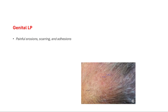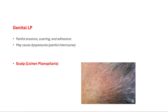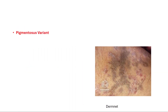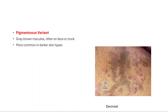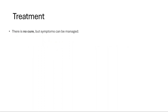The genital type presents with painful erosions, scarring, and adhesions, and may cause dyspareunia — painful intercourse. Scalp involvement, called lichen planopilaris, features follicular papules and scarring alopecia. The pigmentosus variant presents with grey-brown macules, often on the face or trunk, and is more common in darker skin types.